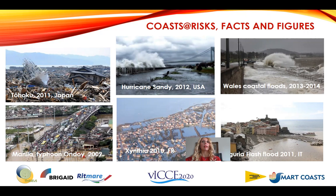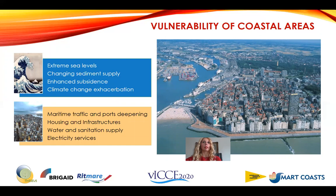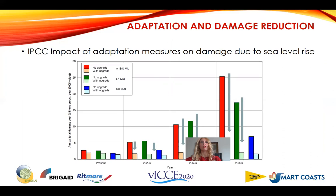Coastal areas are threatened by many hazards, including recent disasters due to typhoons, hurricanes, storm surges, rainfall, flash floods, and tsunamis. There is a strong relation between economic activities and their growth in coastal areas and the vulnerability of those areas. Factors such as extreme sea levels, changes in sediment supply, onset subsidence, climate change, maritime traffic, increased housing and infrastructure, and water and electricity services all interplay. IPCC has shown how far adaptation measures can reduce annual damage due to sea level rise.